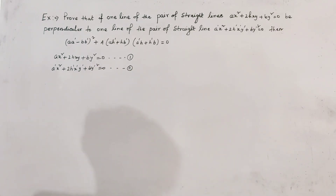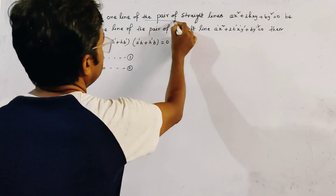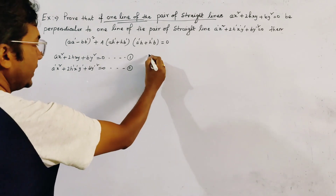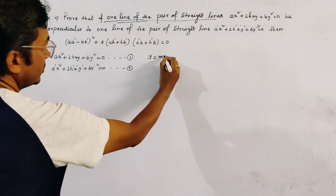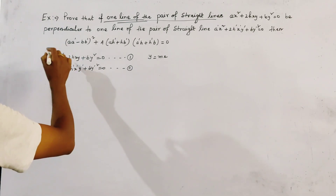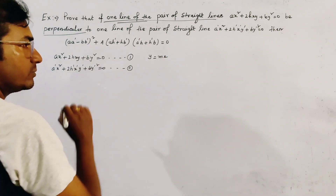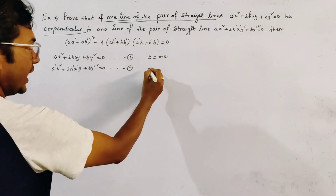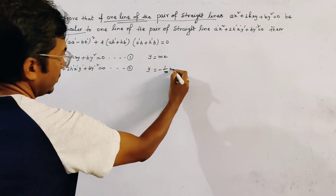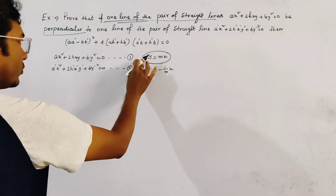From the first pair, we take one line and let it be y = mx. From the second pair, we take one line which is perpendicular to y = mx, and let it be y = (-1/m)x.